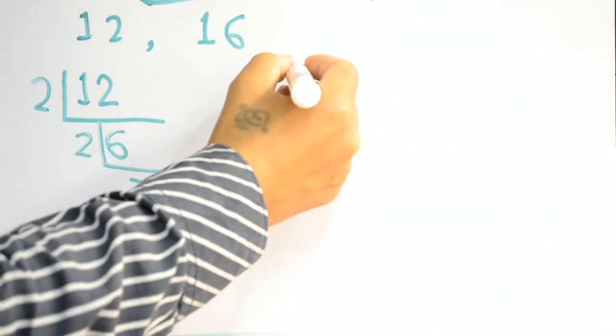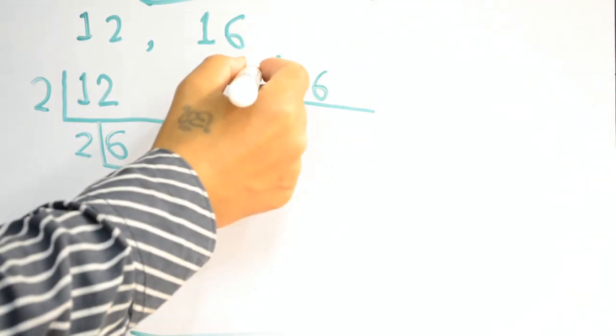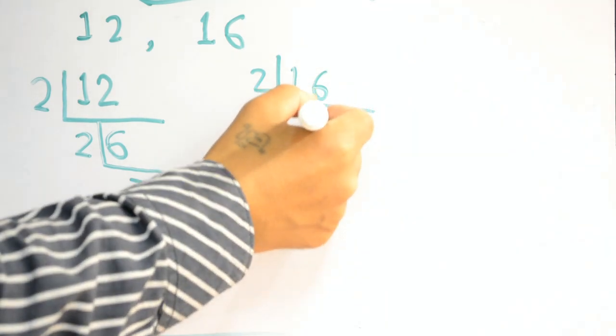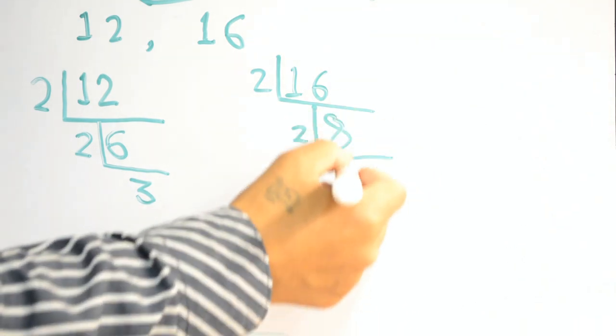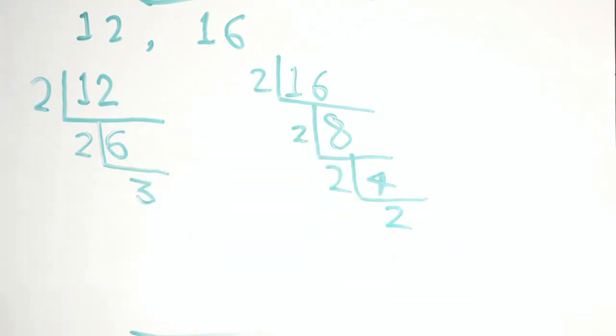Similarly, we can find 16 as well. 16 is divisible by 2. 2 times 8 are 16. Again, 8 is divisible by 2. 2 times 4 are 8. 4 is divisible by 2 again. 2 times 2 are 4.